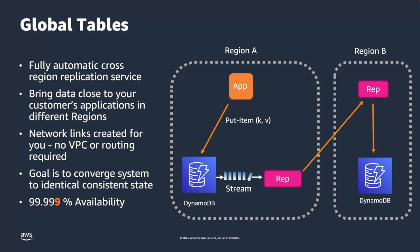You don't want to think about a global table as one entity. What you actually have is two separate DynamoDB tables — one in each region — with a replication infrastructure and a replication relationship configured between them. That's the mental model you want to have. There's no special networking to set up; you don't have to do any VPC magic or routing. This is all fully managed by the DynamoDB service.